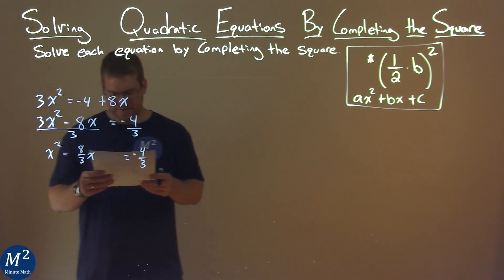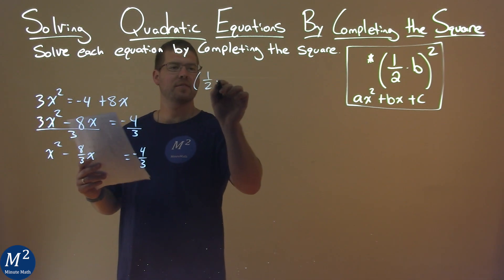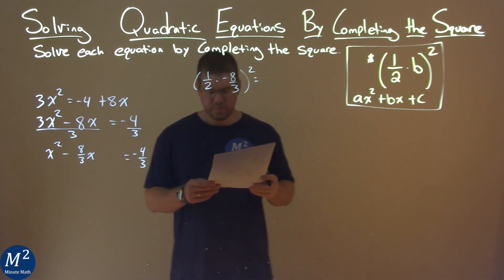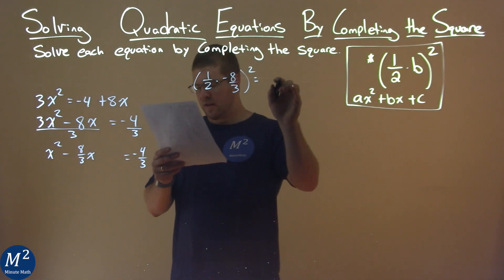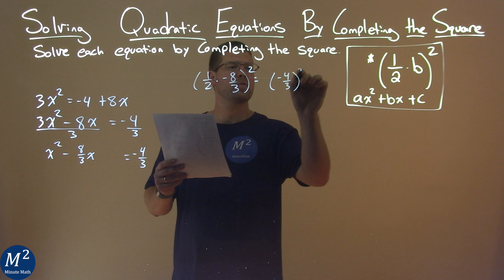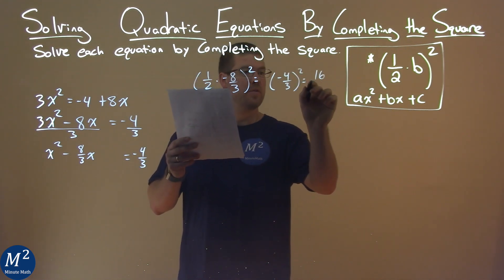My b value now is -8/3. So I use my formula: 1/2 times -8/3, all squared. Well, 1/2 times -8/3 is -4/3 squared, which comes out to be positive 16/9.